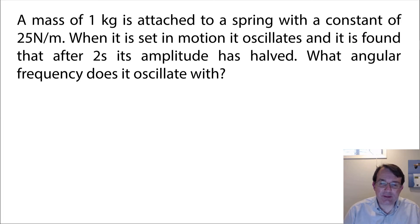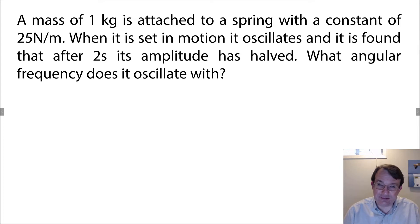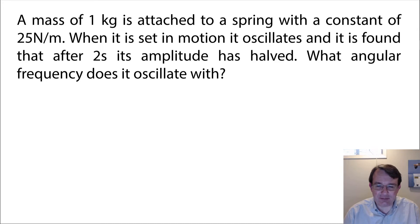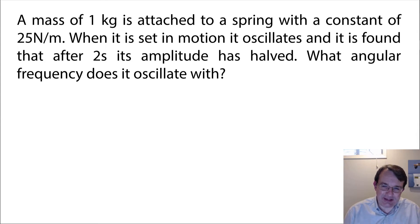Here is a typical type of question you'll encounter when dealing with underdamped oscillators. We have a mass of 1 kilogram attached to a spring with a constant of 25 newtons per meter. It's set in motion and it oscillates — telling us immediately that it is underdamped. We're then told that after two seconds its amplitude is halved, and we're asked what angular frequency does it oscillate with.